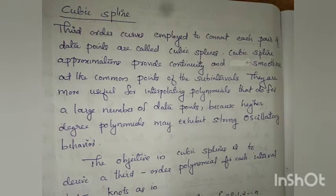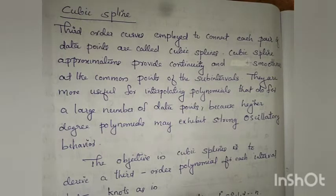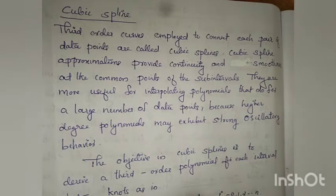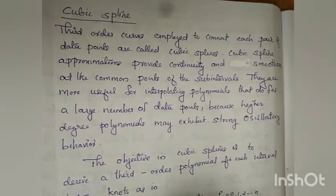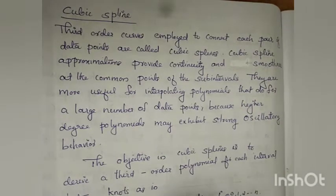Cubic spline is a third-order curve employed to connect each pair of data points. The cubic spline approximations provide continuity and smoothness at the common points of the subintervals. They are more useful for interpolating polynomials than for a large number of data points, because higher-degree polynomials may exhibit strong oscillatory behavior. That is the cubic spline advantage.